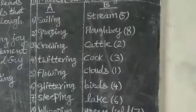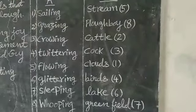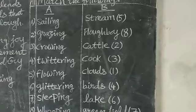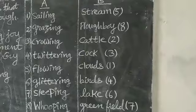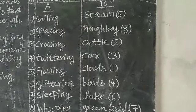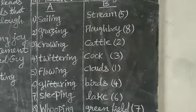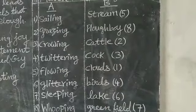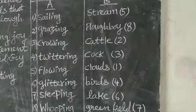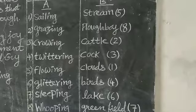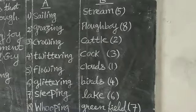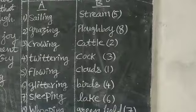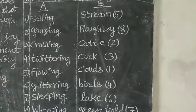First write all the A and B sides. The first word is 'sailing.' You can refer to the reader. What do you match for 'sailing'? In the poem, William Wordsworth has described sailing clouds — the white clouds are sailing in the sky. So on the B side, 'clouds' is the answer for the first one, and I have put number 1 next to it.